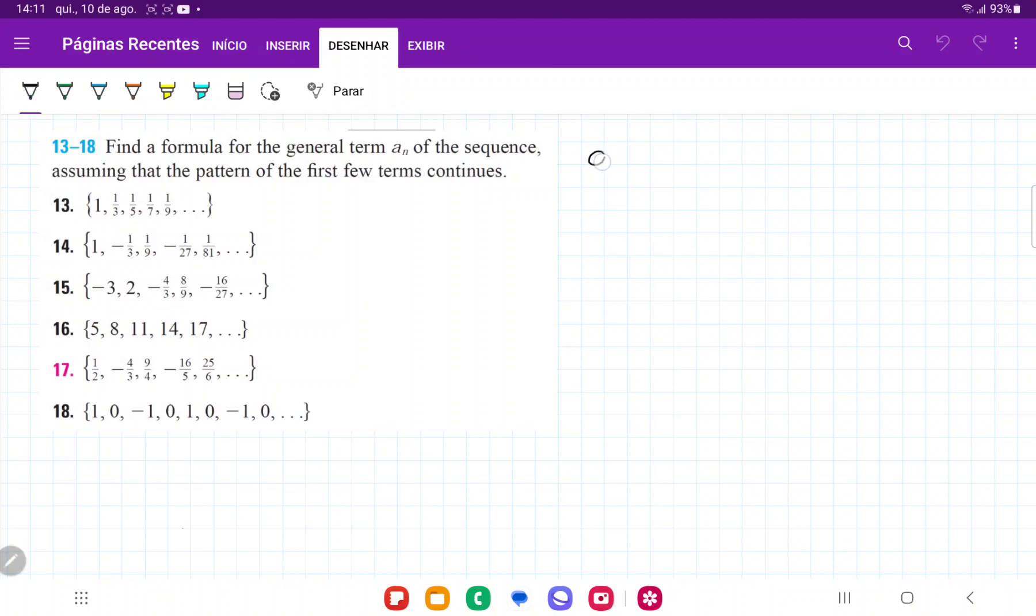So we have here that a1 is equal to 1, and since everything else is a fraction, I'm just going to express this as a fraction. a2 is equal to 1 third, a3 is equal to 1 over 5, a4 is equal to 1 over 7, and so on.